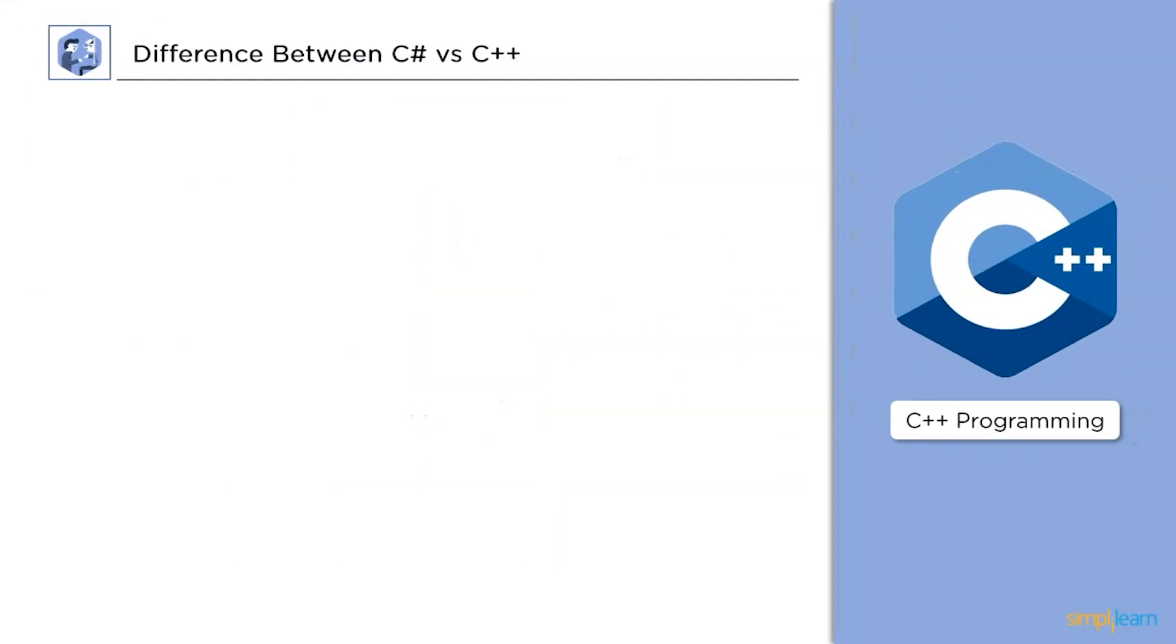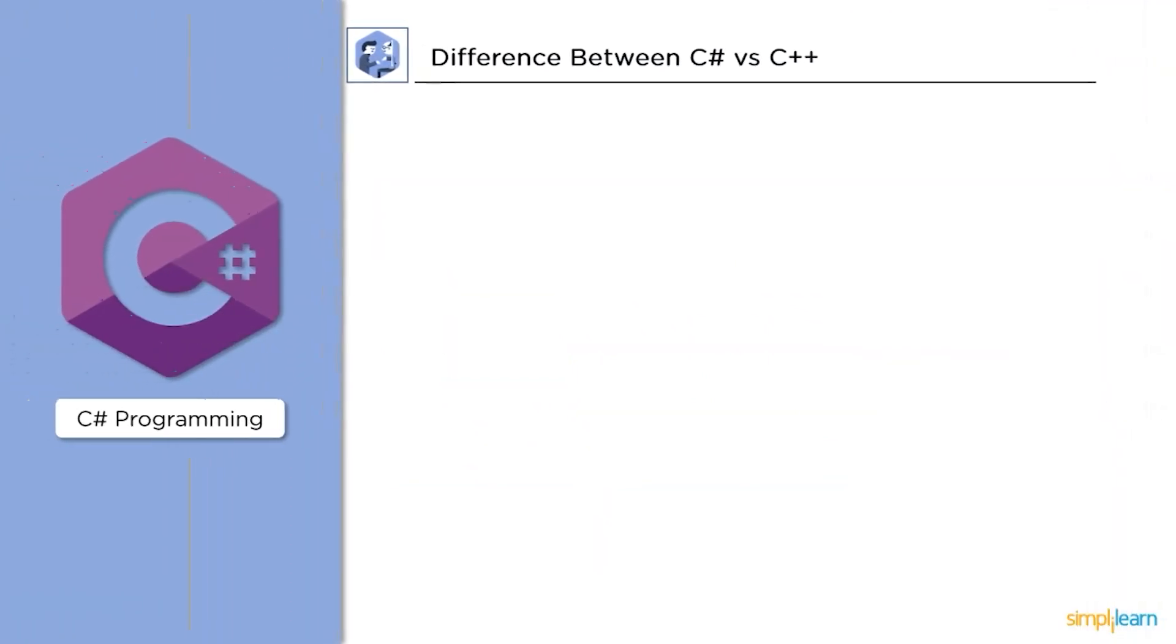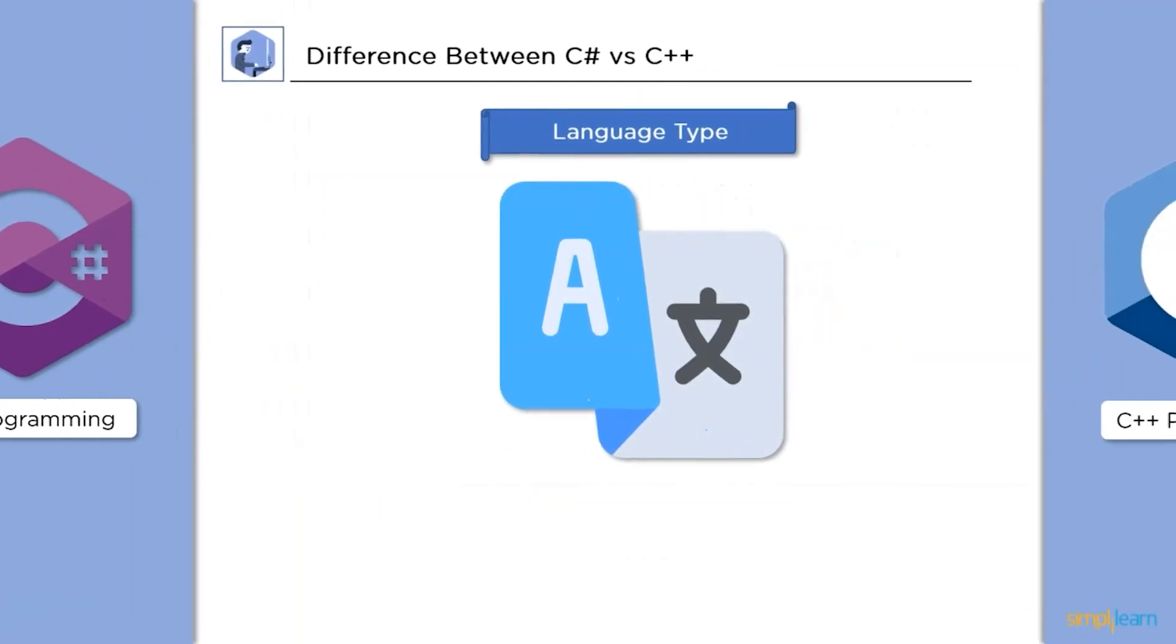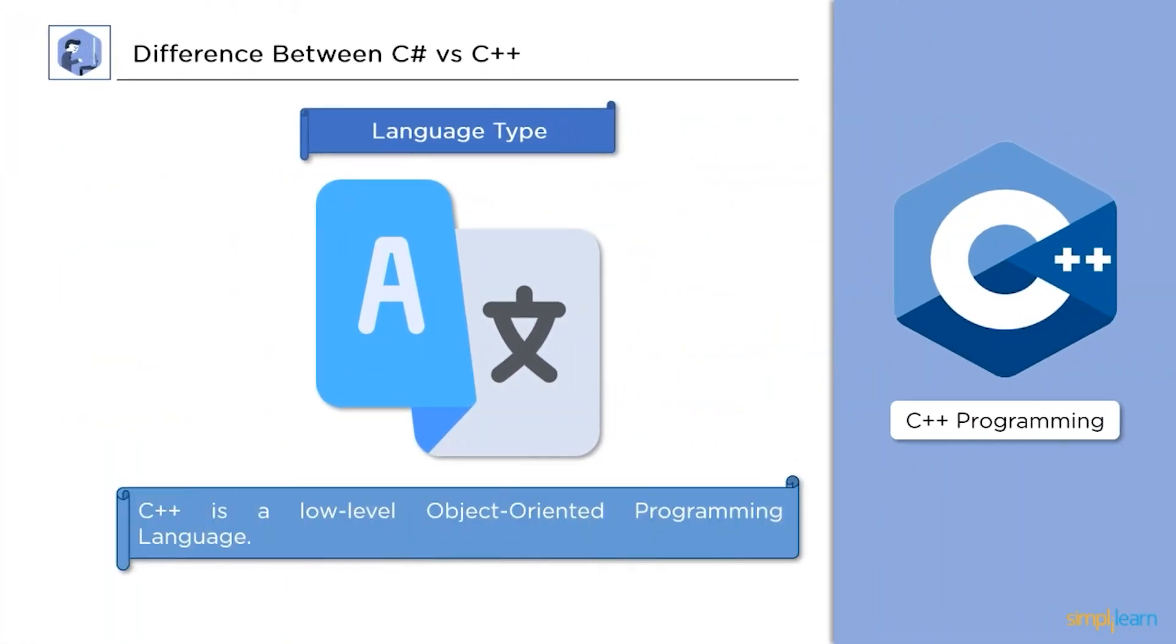Next up, language type. C Sharp is a high level object oriented programming language, while C++ is a low level object oriented programming language.